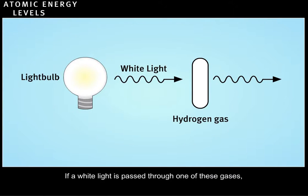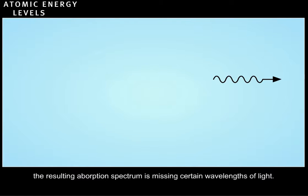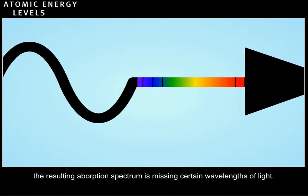If a white light is passed through one of these gases, the resulting absorption spectrum is missing certain wavelengths of light.